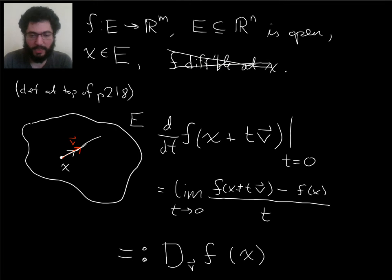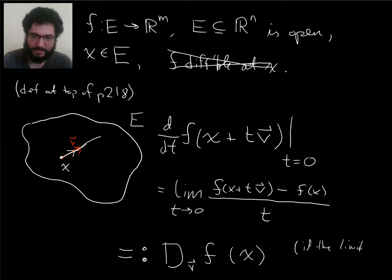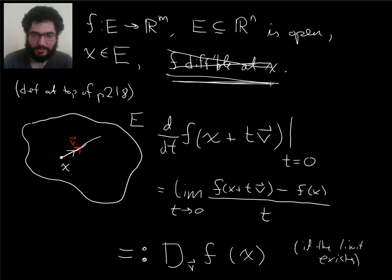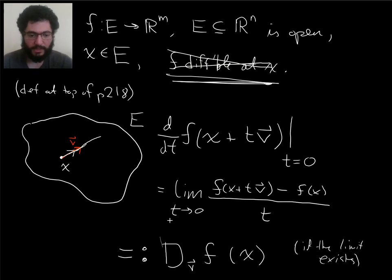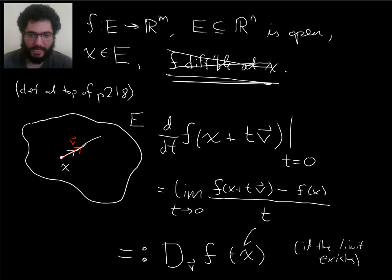So it's still defined this way, but this is an output with multiple components — an m-tuple. This limit is a limit over a real variable, but it's of a function with m components. What I've written here is what we define to be the directional derivative of f in the v direction evaluated at x. This limit may or may not exist; if it does exist, then we define it to be this.